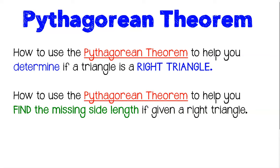In this tutorial, you will learn how to use the Pythagorean Theorem to help you determine if a triangle is in fact a right triangle, or you'll use the Pythagorean Theorem to help you find the missing side length if you are given something you already know is a right triangle.